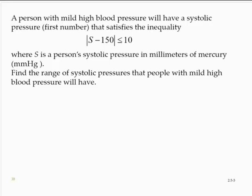If we are told that mild blood pressure has a systolic pressure that satisfies that inequality, let's solve that inequality for s to find the actual systolic numbers.